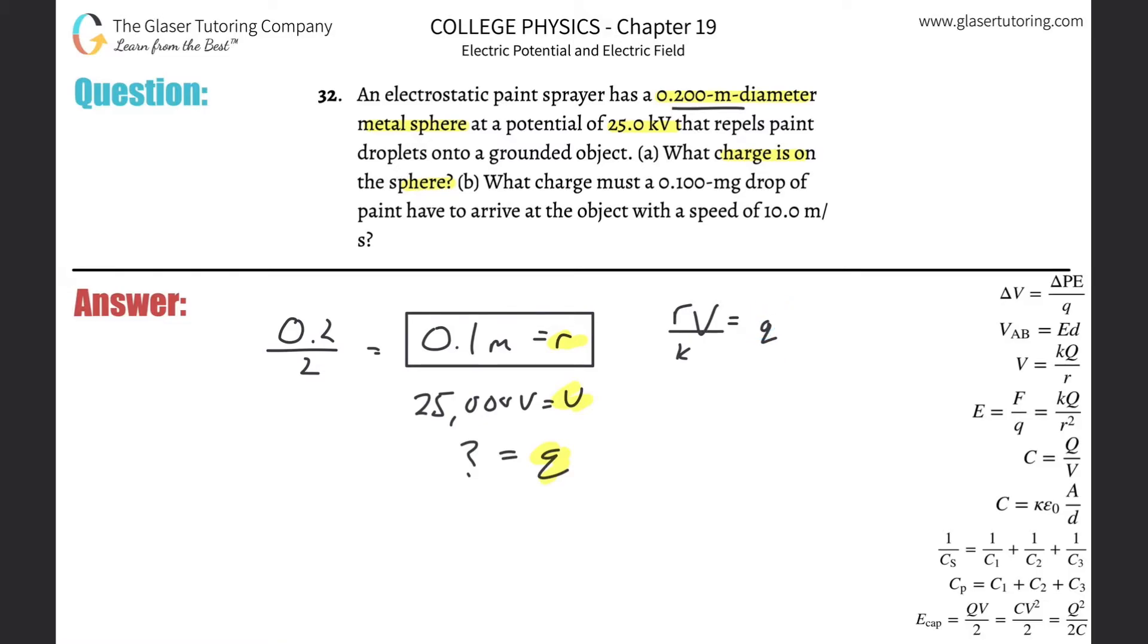And isn't it just so pretty? So R is going to be 0.1, the voltage is 25,000, the K is 9 times 10 to the 9th, and that's the Q now. So let's calculate. So 0.1 times 25, oops, 25,000, then divided by 9 times 10 to the 9th.